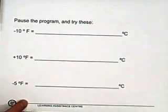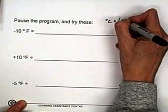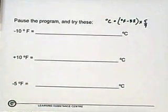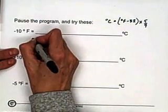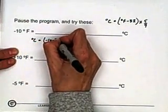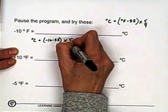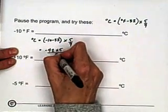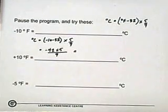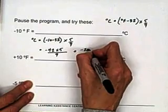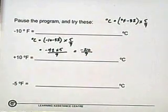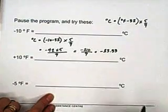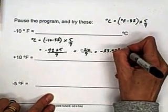Let's remind ourselves of the formula: degrees Celsius is equal to degrees Fahrenheit minus 32 times 5 ninths. If we have minus 10 degrees Fahrenheit, degrees Celsius equals minus 10 minus 32 times 5 ninths, which is minus 42 times 5 divided by 9. Minus 42 times 5 is minus 210. Minus 210 divided by 9 gives us minus 23.33 — a repeating 3 — so we round to minus 23.33 degrees Celsius.